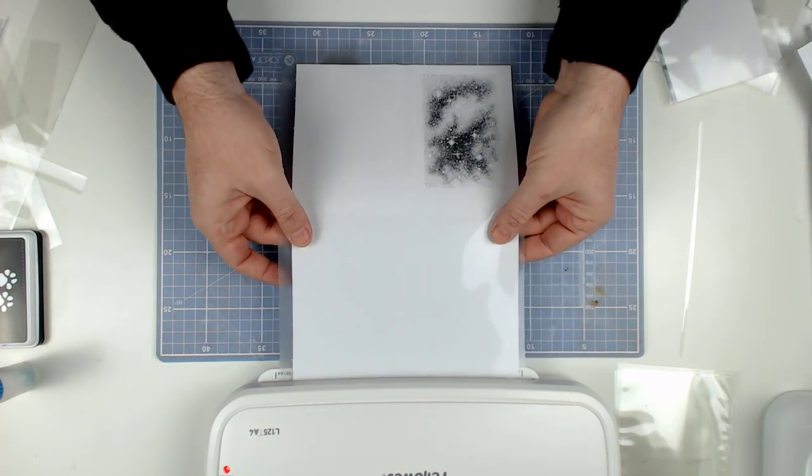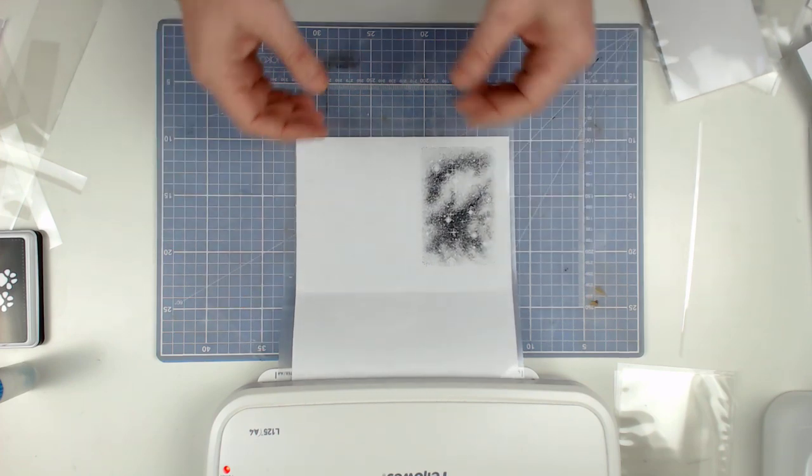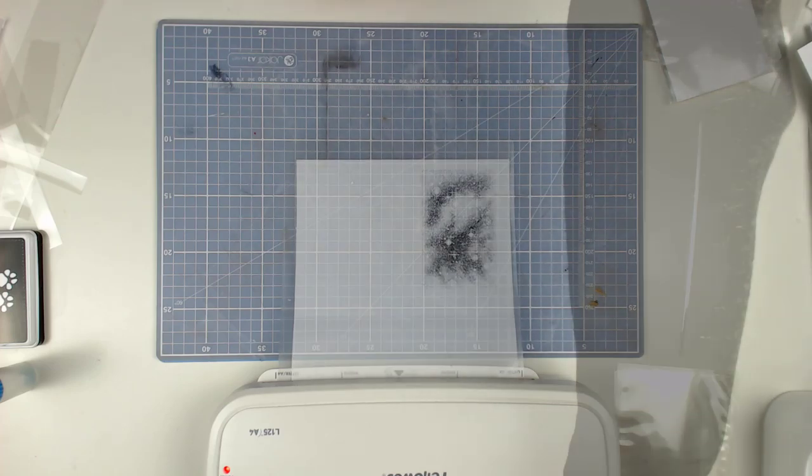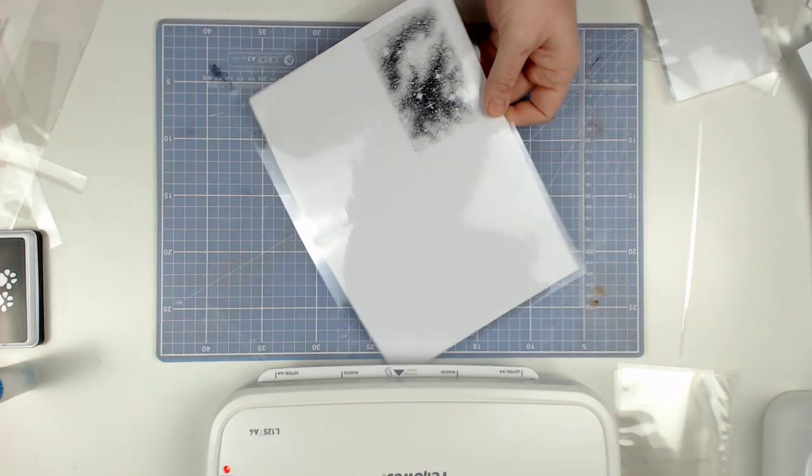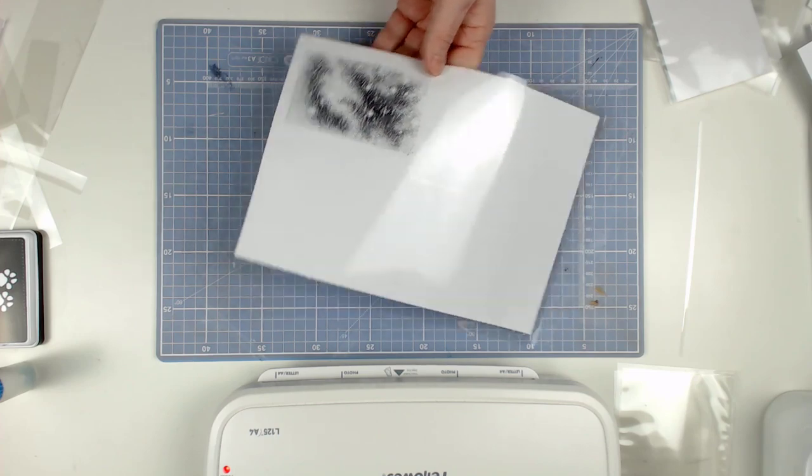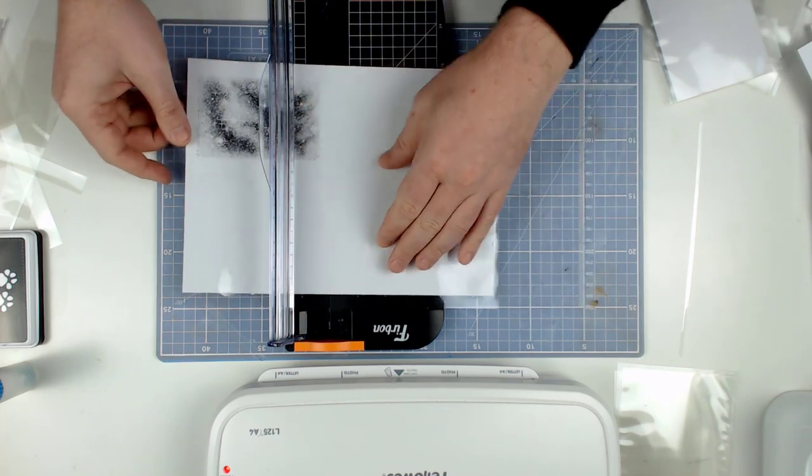Just using one more laminating sheet and popping that through. When it is done, I am going to trim it down to the size of the reference card, not leaving any laminate around the edge.